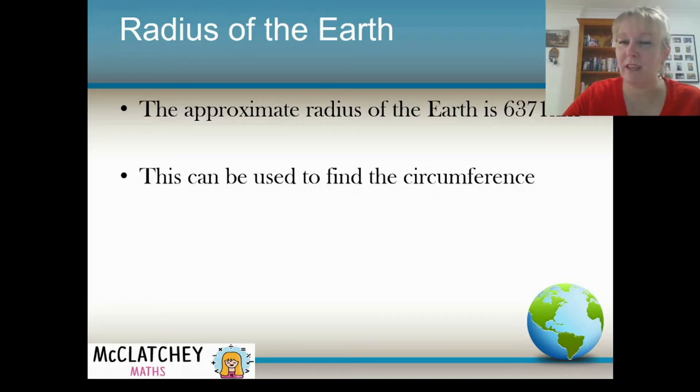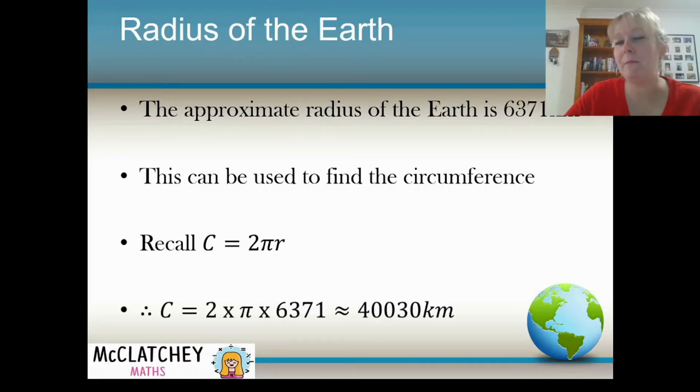However, we can actually use this number and work backwards to find the circumference. So the circumference, as you would recall from grade 8, is 2 times pi times the radius. So if we substitute that approximate value for our radius in, we get an approximate value for our earth's circumference of 40,030 kilometers. Now you don't need to remember this off by heart, but I'm just showing you today where the different numbers come from.